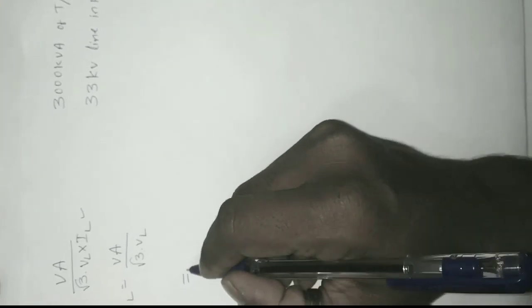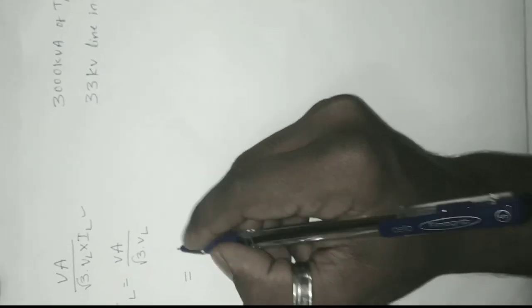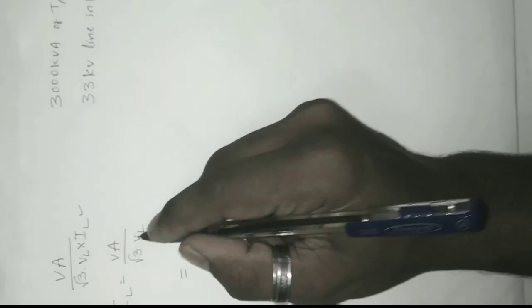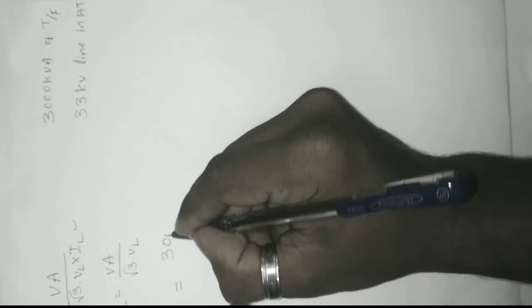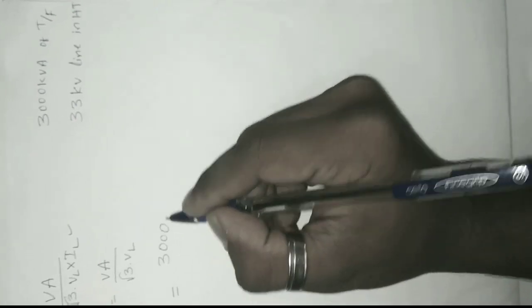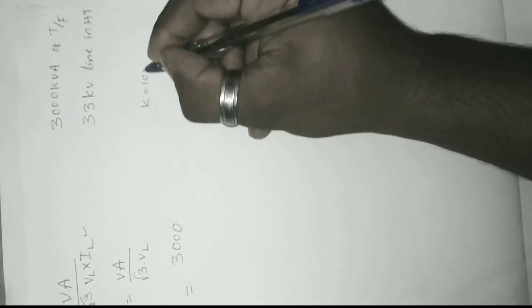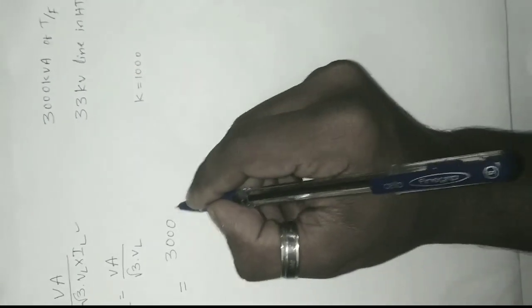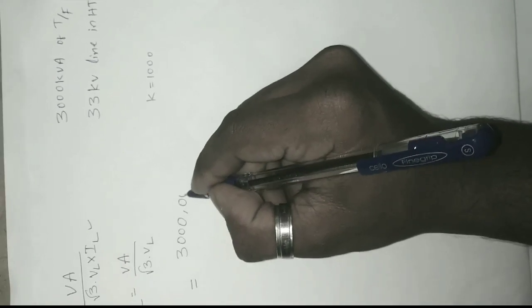Now substitute the values in the formula VA VL per ampere. 3000 kVA - kVA means k is equal to 1000, so we need to add three zeros.